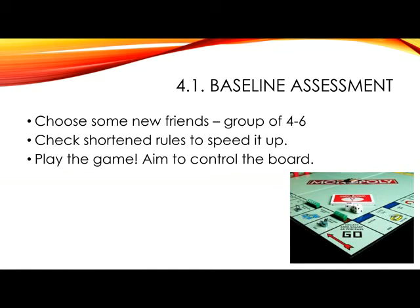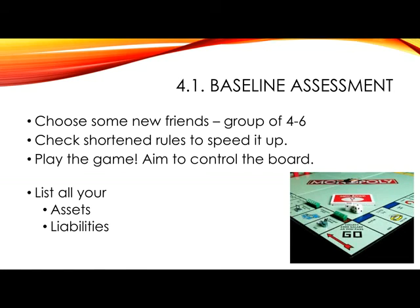When you have finished playing the game, list all your assets and all your liabilities. Remember, your assets are the things that you own — in other words, your property, your houses and hotels, and all the cash that you've got. Your liabilities are all those amounts that you owe to somebody else, maybe the bank, maybe your other players. Then work out a total of your assets and your liabilities in preparation for Lesson 2.